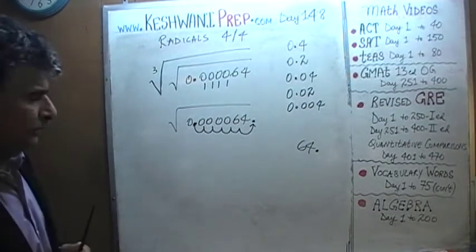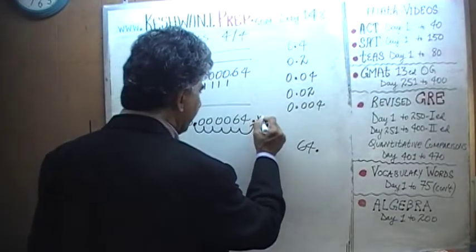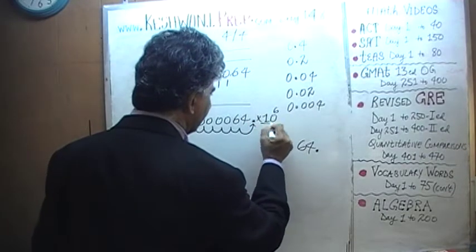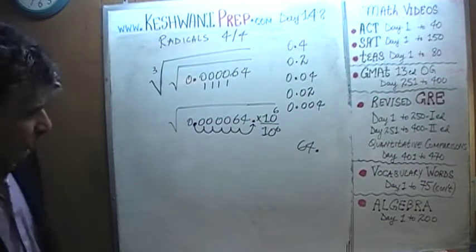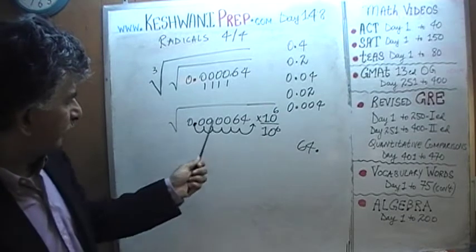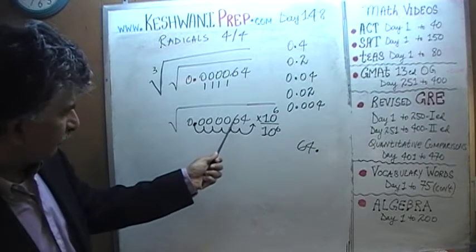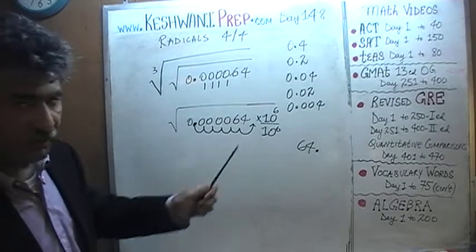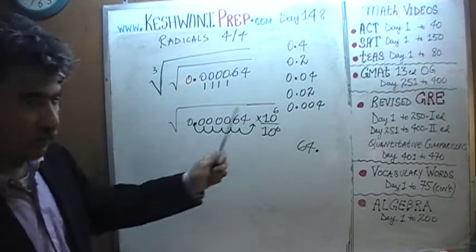Which means, if you were to take this quantity and multiply it by 10 raised to 6, top and bottom, if you were to multiply the top and bottom by 10 raised to 6, now 0.000064 times 10 raised to 6, the decimal goes all the way from here to here. It becomes 64 on the top.